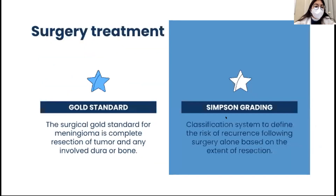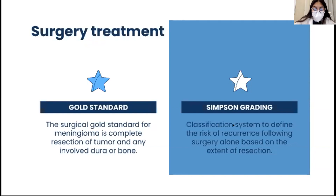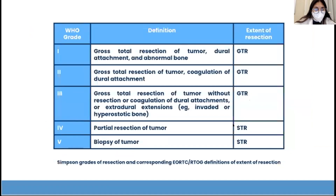With surgery treatment, we know that the surgical gold standard for meningioma is complete resection of tumor and any involved dural bone. Recognizing that so-called benign meningioma regrew despite apparently satisfactory surgery, in 1957 Simpson described a classification system to define the risk of recurrence following surgery alone, based on the surgeon's intraoperative assessment of the extent of resection. This is known as the Simpson grading.